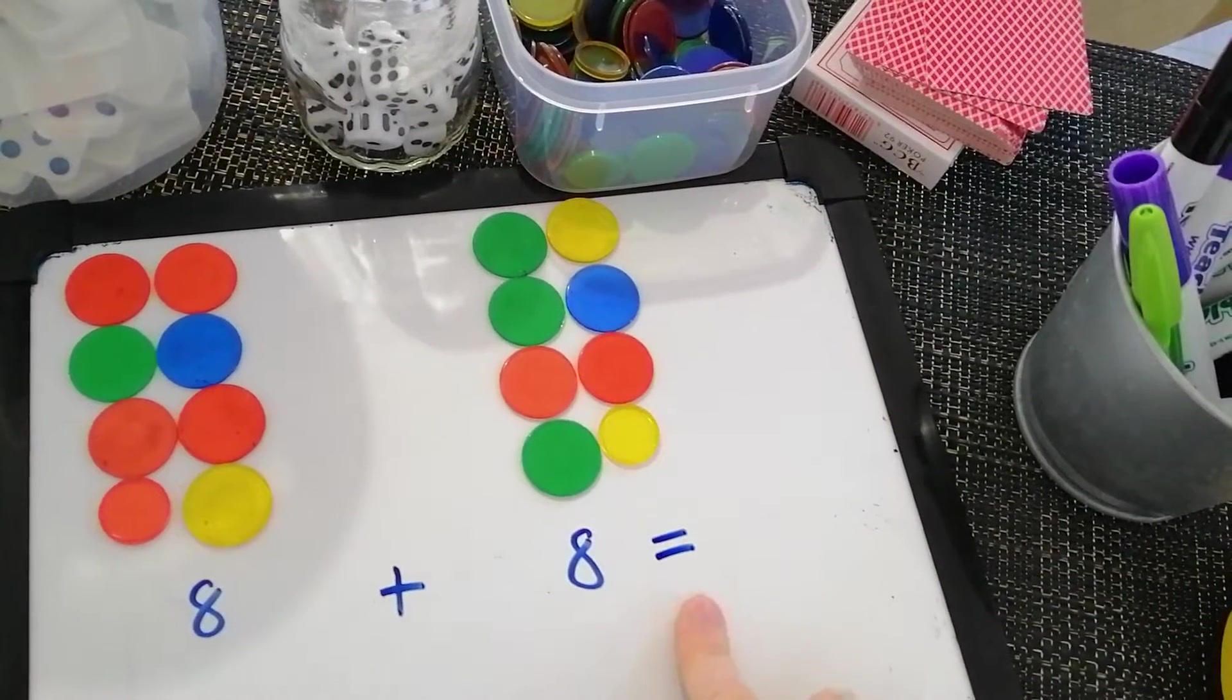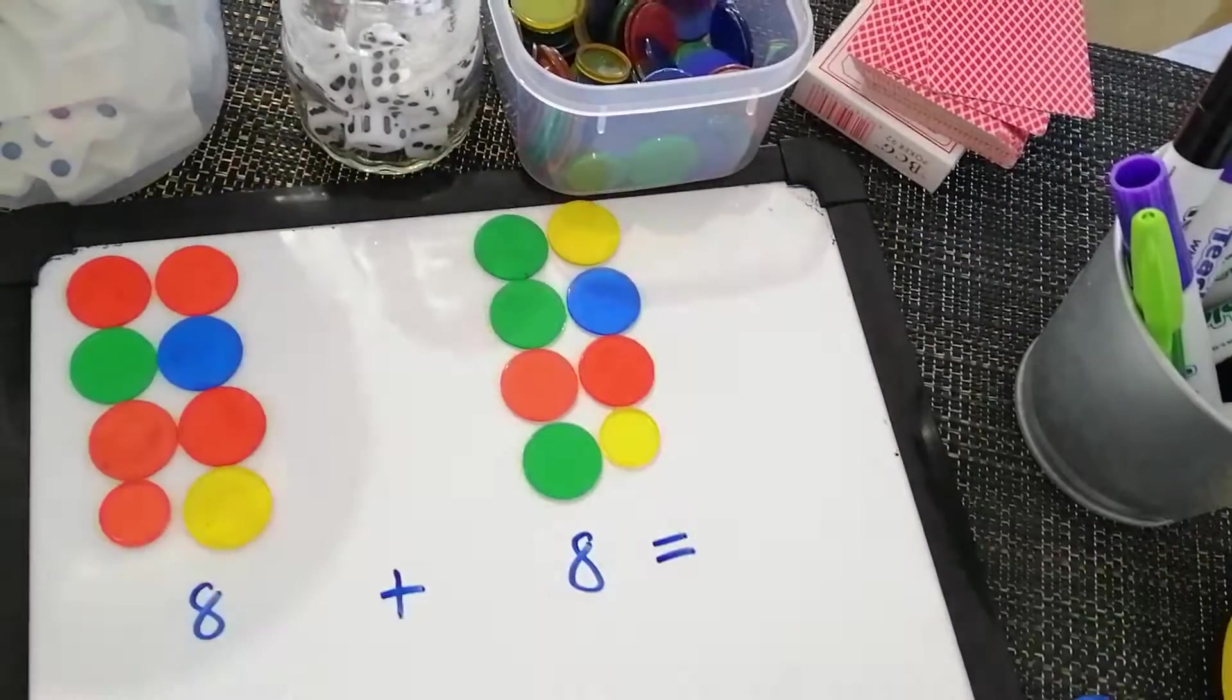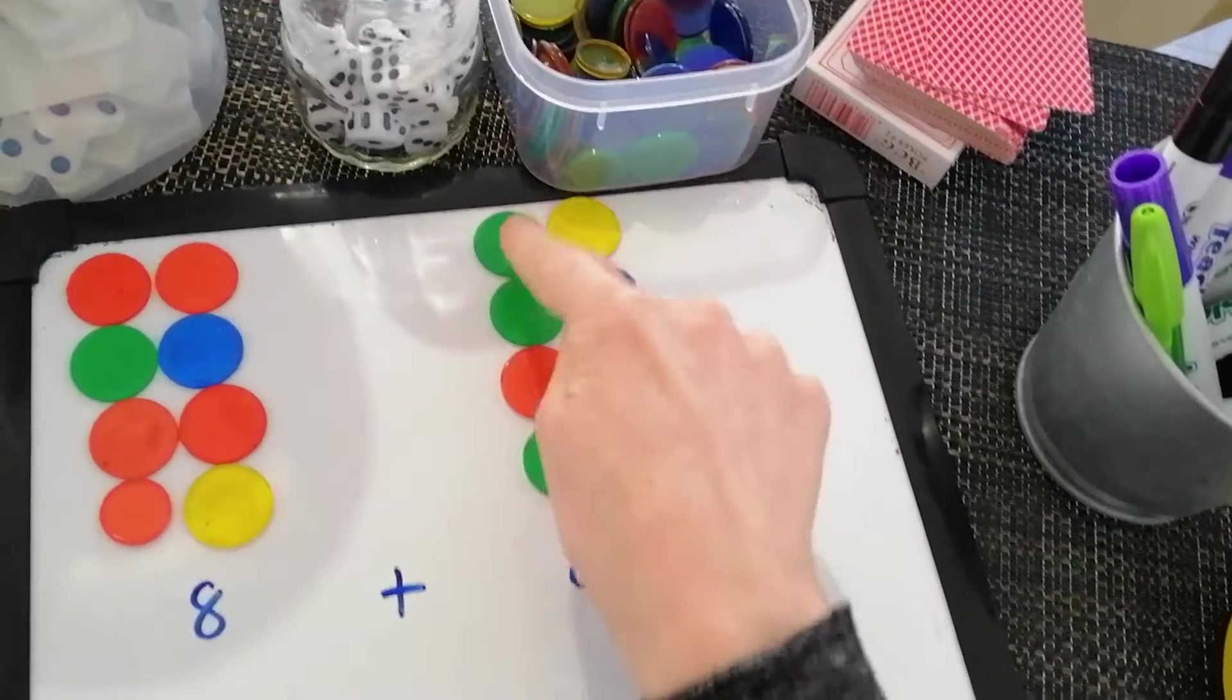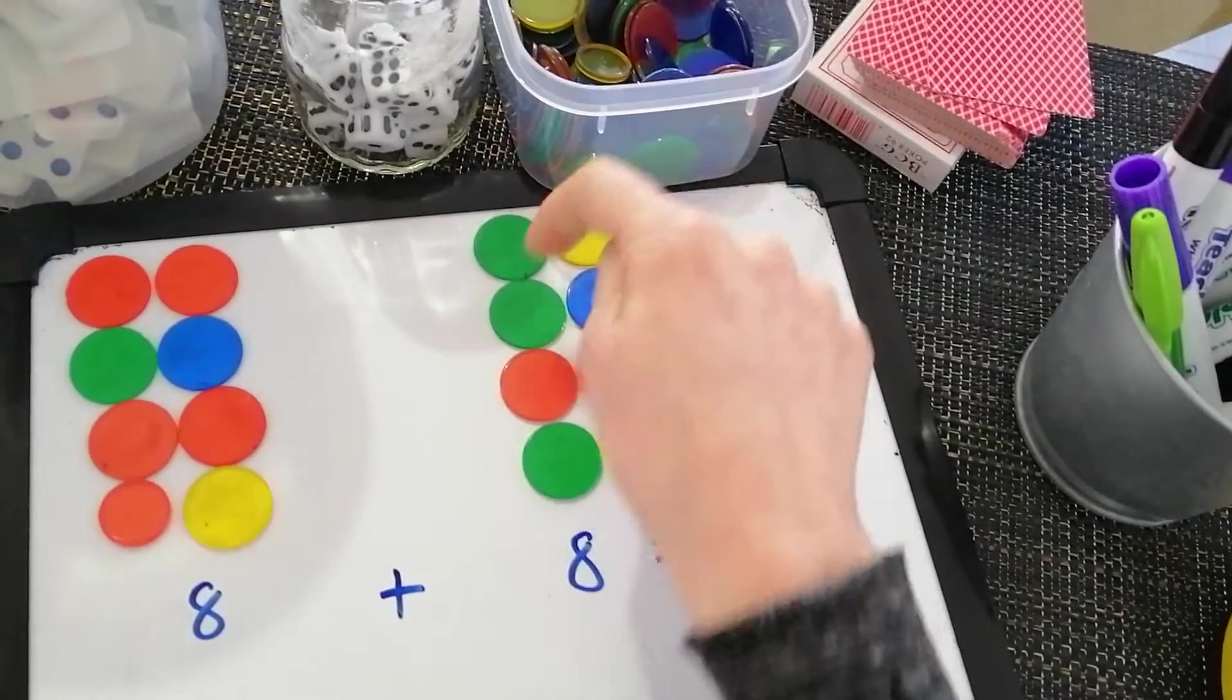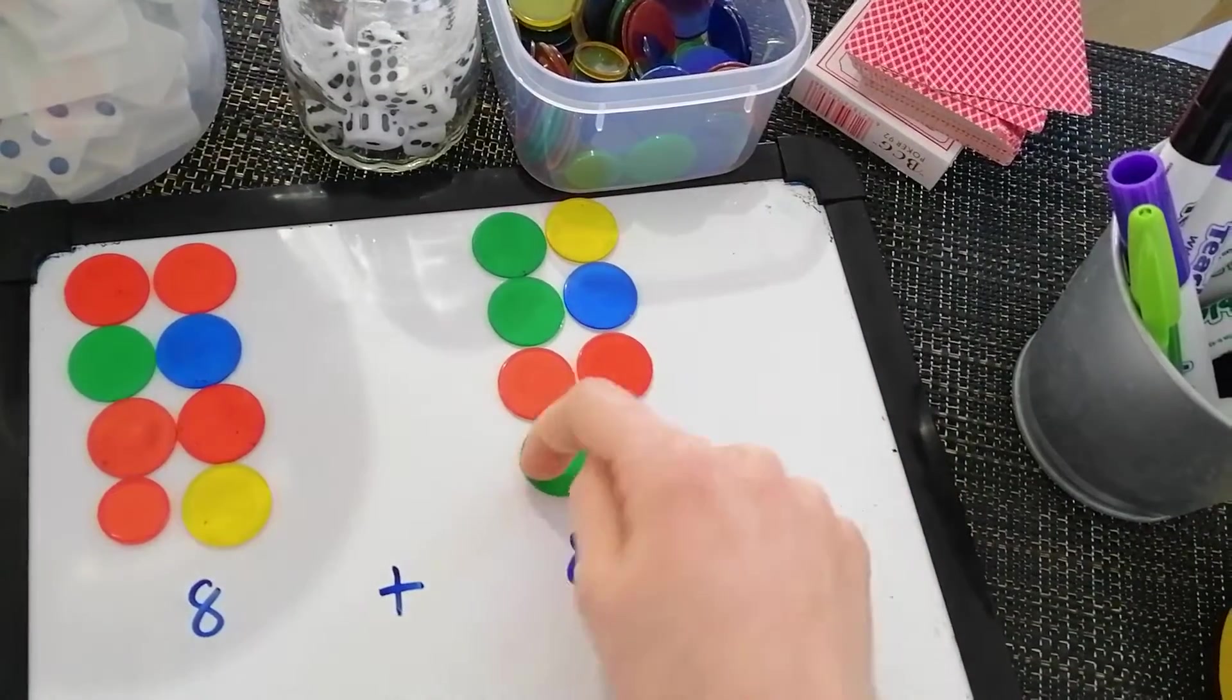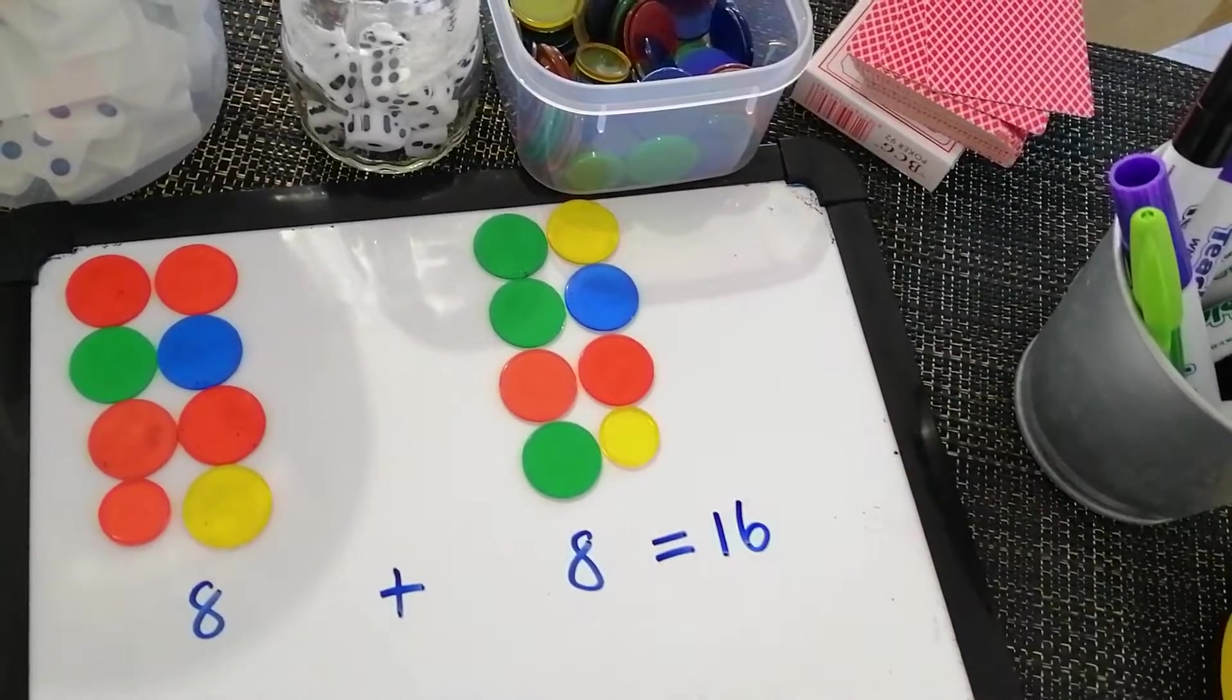Eight plus eight. Alright. Locking in eight. I don't have to count them all again because I know there's eight there. Eight. Counting it once. Nine, 10, 11, 12, 13, 14, 15, 16. How many counters all together? There are 16.